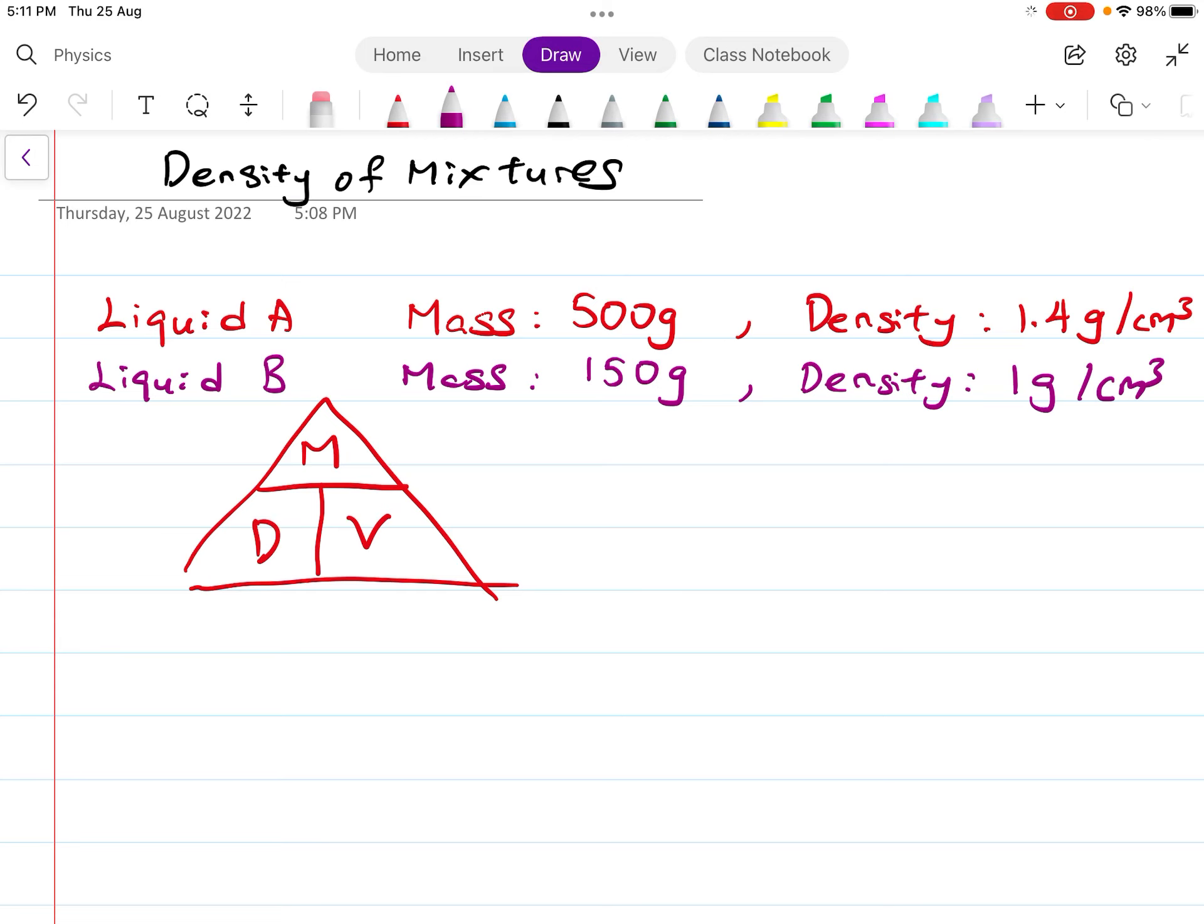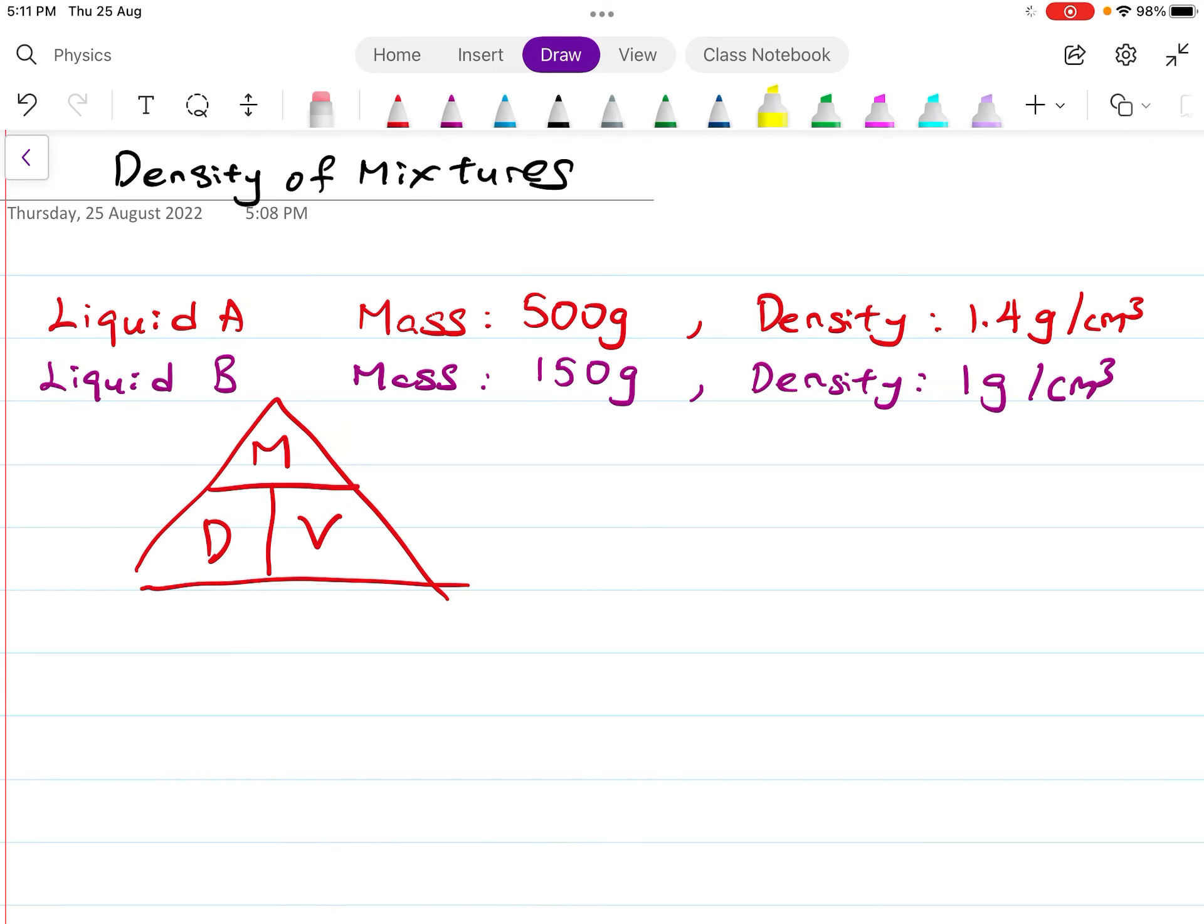First, I want to find the total volume of liquid A. We are given the mass and density. Mass is on top, density is at the bottom. To calculate the volume of liquid A, you use mass divided by density. So volume equals mass divided by density.